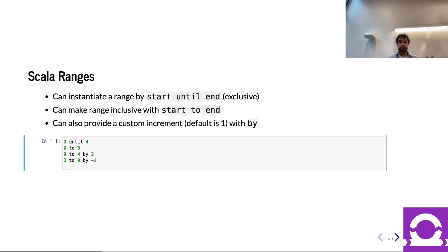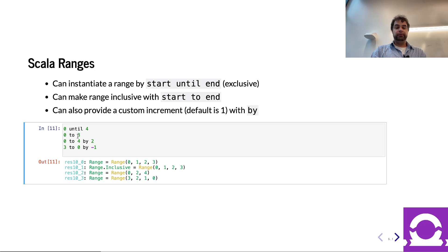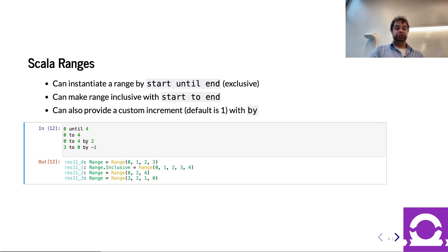Another handy thing is a range. You've seen this in Python, and it's handy in Scala too. If you want a range of numbers, say a starting number `until` the ending number. `until` is exclusive — it will not include the end number. If you say `to`, it will include that number. For example, `0 to 4` includes the 4, whereas `0 until 4` does not. You can also change the increment — by default it's 1, but you can say `by 2` or go backwards with `by -1`.